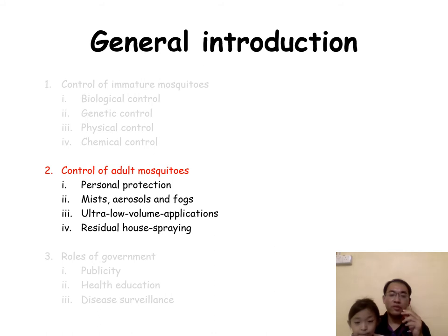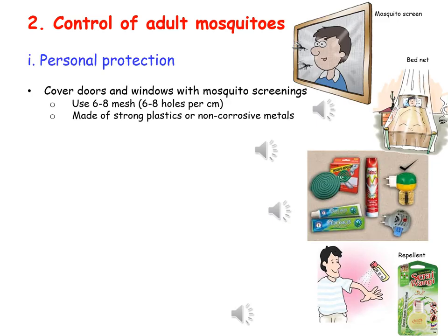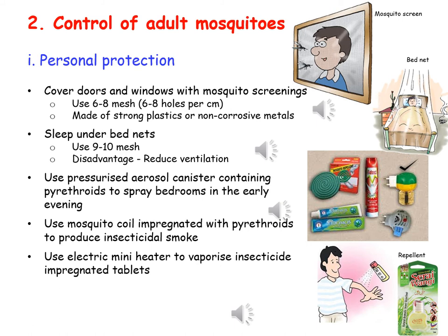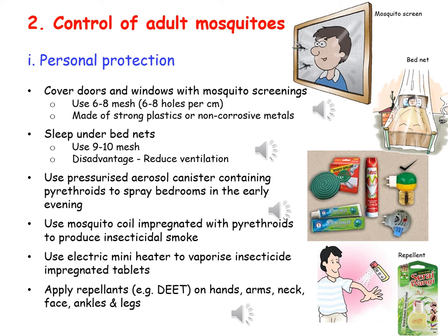The control of adult mosquitoes includes personal protection, the use of mist, aerosols and fogs, ultra-low volume applications, and the use of residual house spraying. For personal protection, many approaches can be performed: we can cover windows or doors with screens so mosquitoes cannot get into the house, set up beds with mosquito nets, and spray the bedroom using mosquito spray before sleeping. We can also use mosquito coils or insecticide vaporizers containing the drug pyrethroid to produce insecticide smoke that kills adult mosquitoes. Repellents can be used during outdoor activities like jungle trekking or hiking during mosquito active feeding hours.